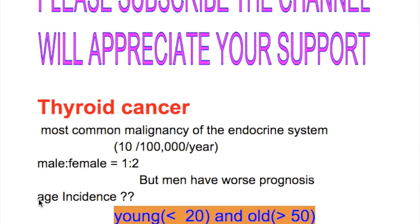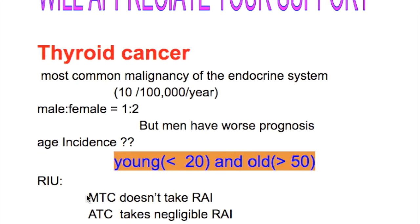What's the age incidence for thyroid cancer? It comes in the young and old — younger than 20 and older than 50 years of age.